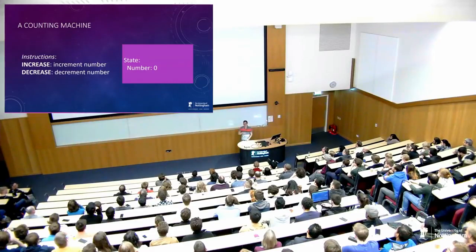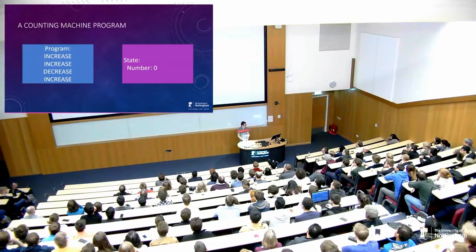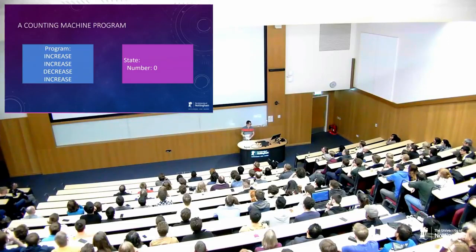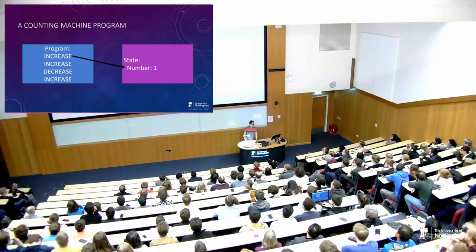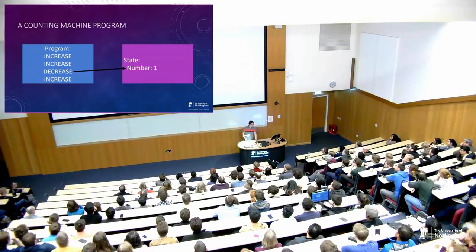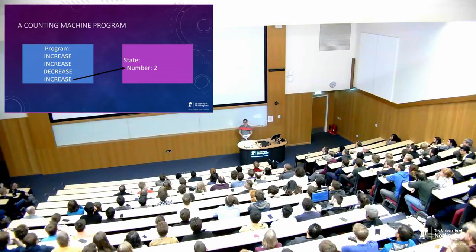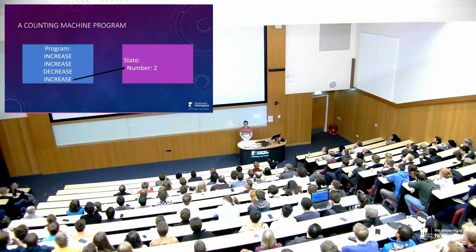When we have these verbs we can chain them together into a sequence of instructions to construct programs. One program might say: increase, increase, decrease, increase. Provided our state starts at zero and we run this program — execute increase, we get to one; execute increase again, we get to two; hit decrease, we go back to one; and increase again, we get to two. So the final state, provided this machine halts afterwards, is that we're left with a state of two.